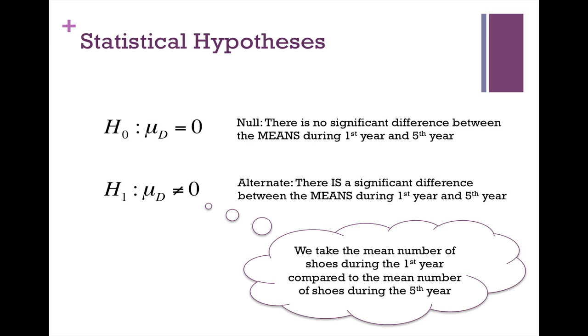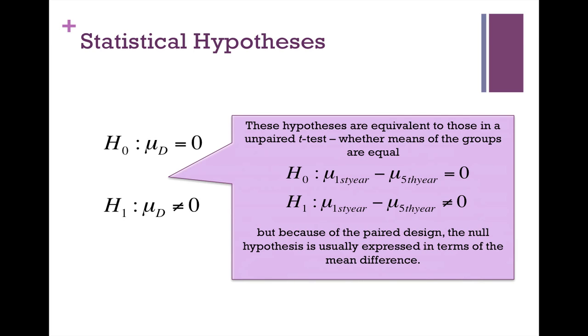We take the mean number of shoes during the first year compared to the fifth year. So we have to remember that it's the mean number compared to another mean number. This is also the same as these equivalent unpaired t-test hypotheses. From our previous section on unpaired t-test, this is how we would state our statistical hypotheses. This mu d is also doing this same type of hypotheses. But because we have a paired difference, the hypothesis is expressed in terms of mean difference. So the only vector we're understanding here is the difference.